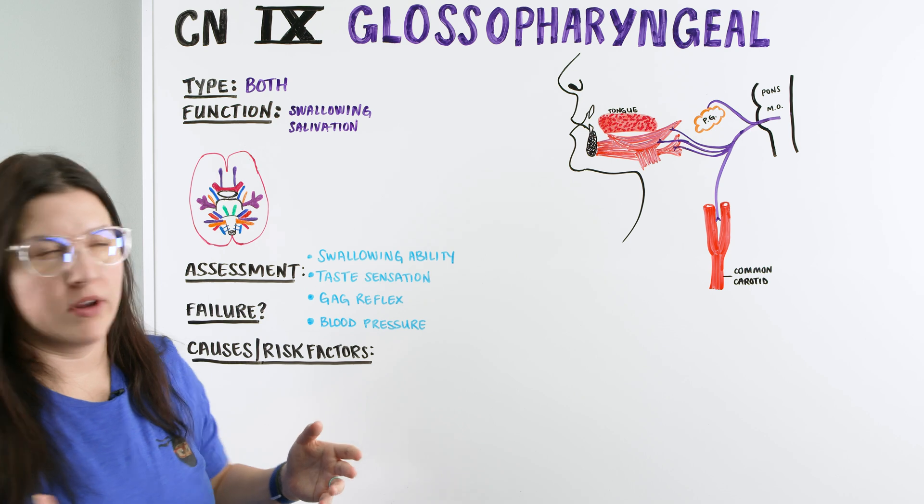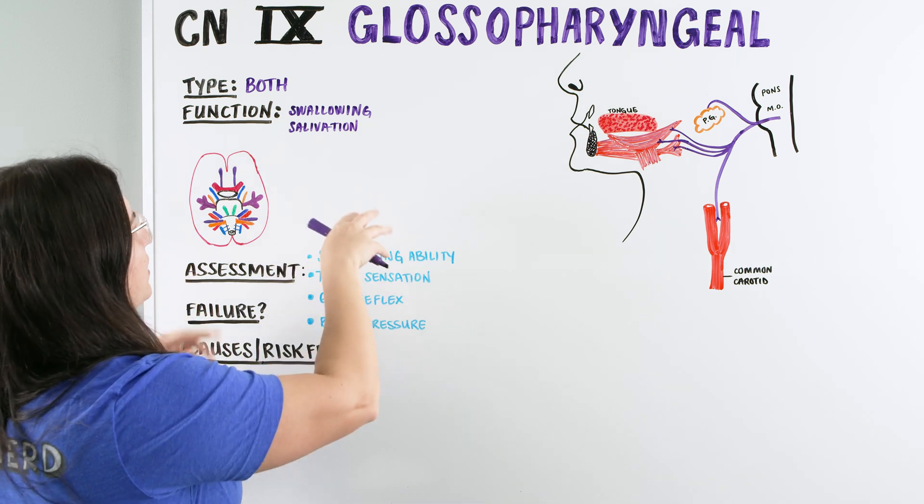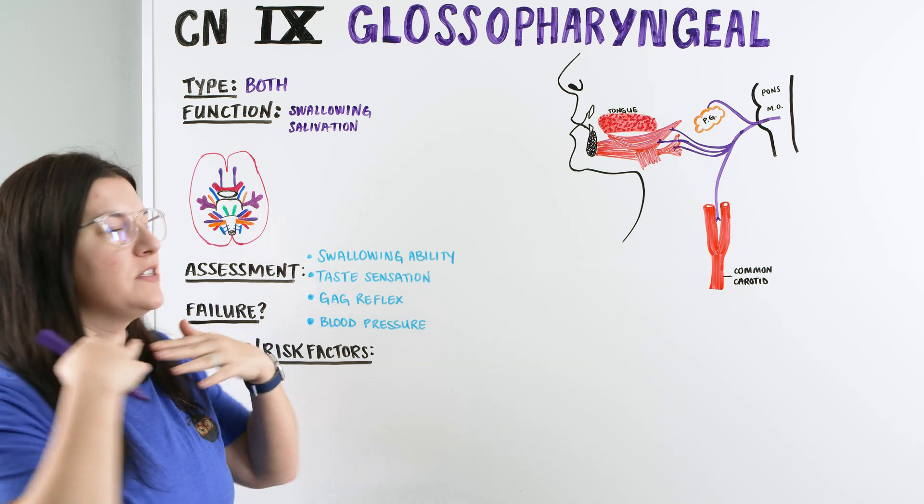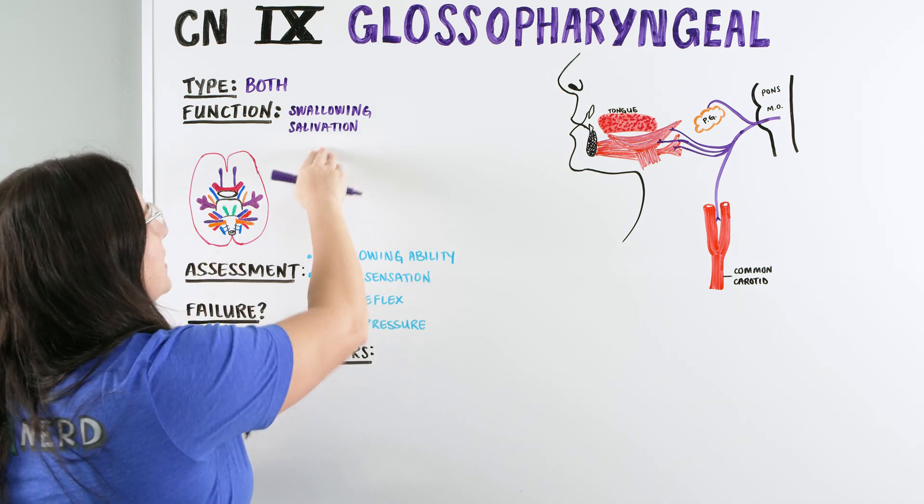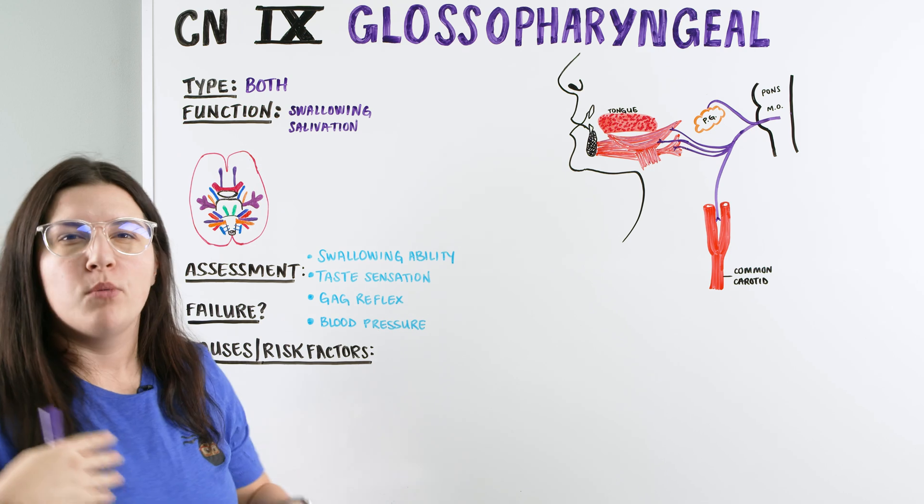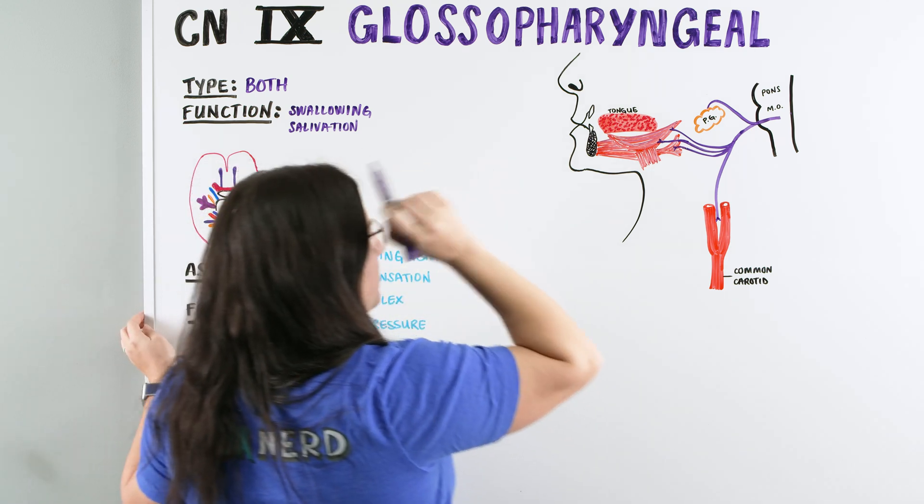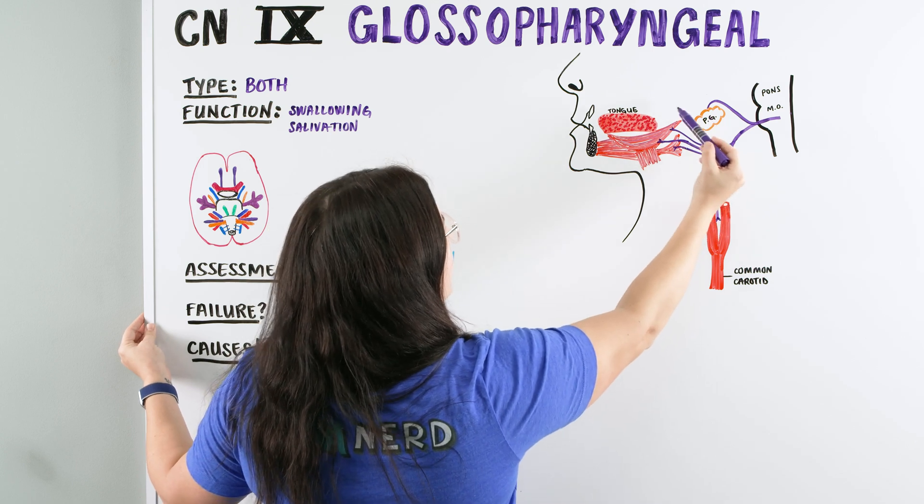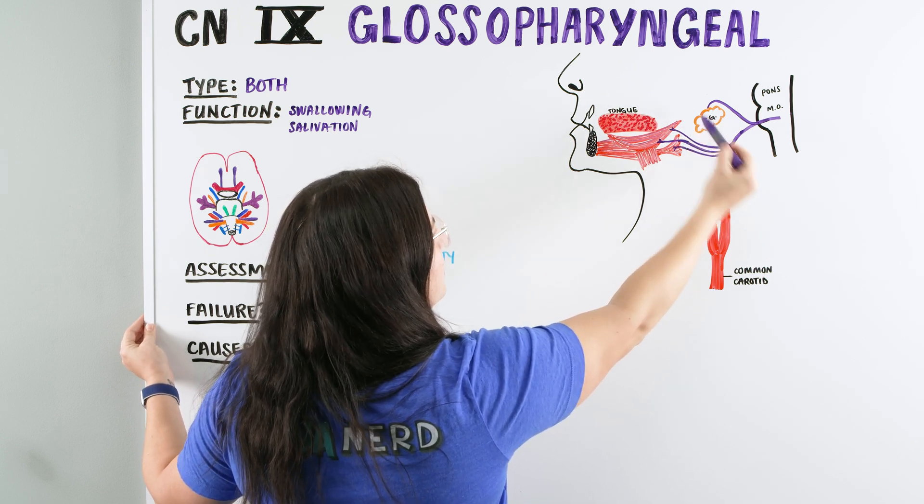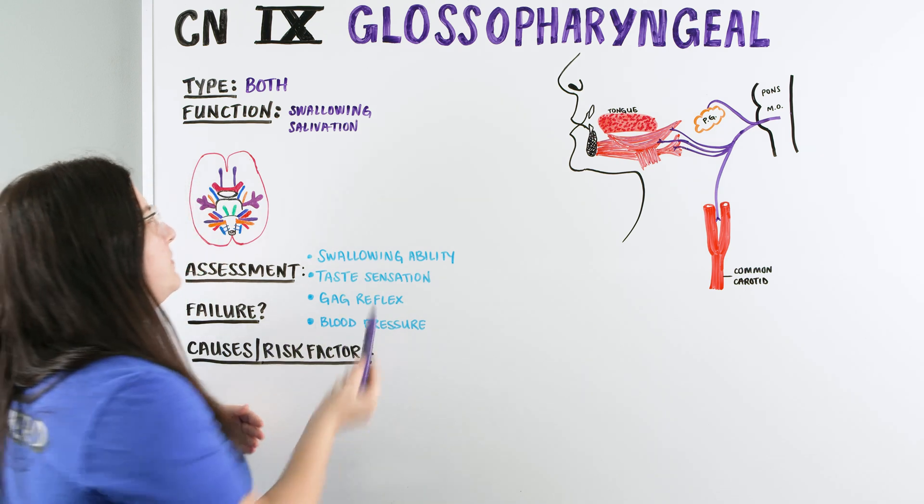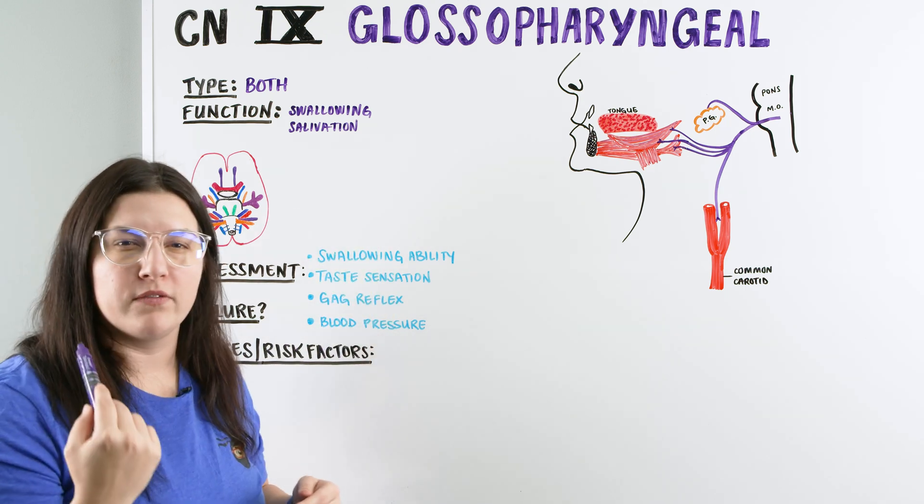Moving on with our functions in the motor category, they all kind of go together. So we have swallowing, the ability to make those muscles move and lift and swallow. Then we also have salivation, which is creating the saliva. We also have taste. And for taste, I like to remember this because we have the parotid and it's near the back of the tongue. So for the glossopharyngeal nerve, we have taste at the posterior third of the tongue.